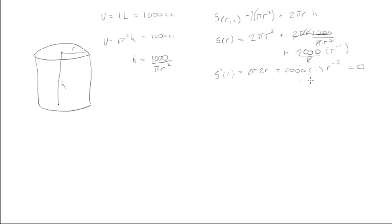Let's clean this up. We have 4πr, and this becomes minus 2000/r². Moving it to the other side: 4πr = 2000/r².